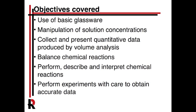This lab covers many objectives for Gen Chem Laboratory. One is just using basic glassware — we're going to learn how to use the burette, a new piece of glassware you may not have used before. This is really a lab where you'll do a lot of manipulation of concentration, use stoichiometry to determine quantities, get quantitative data, and work with chemical reactions. This is an experiment where you can get very accurate data if you're careful and have good technique and patience.